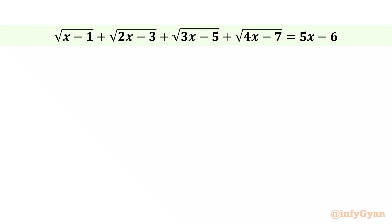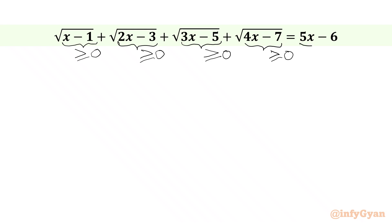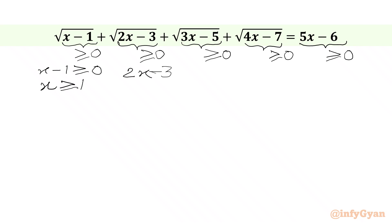Let us get started by writing the domain of the equation first. The radicand (x minus 1) must be greater than or equal to 0, radicand (2x minus 3) must be greater than or equal to 0, (3x minus 5) must be greater than or equal to 0, and radicand (4x minus 7) must be greater than or equal to 0. Also, (5x minus 6) must be non-negative since we have a sum of four square roots. From the first inequality, x must be greater than or equal to 1.